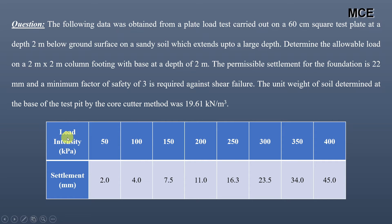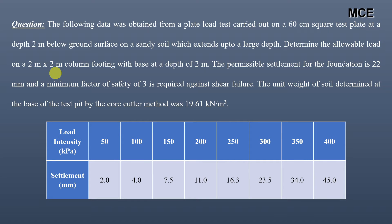We have load intensity in kilopascal and the corresponding settlement for each load intensity. We have to find the allowable load for the 2 meter by 2 meter footing. We will use two methods: the first is the shear failure criterion, and the second is the settlement criterion. We will take the lower of the two values as the allowable load.